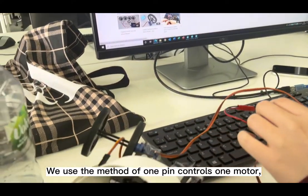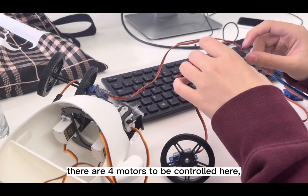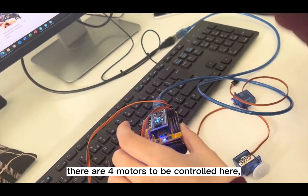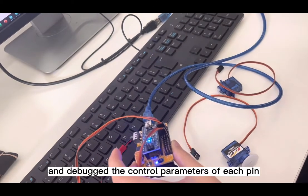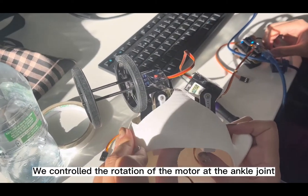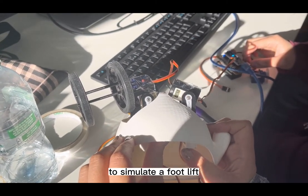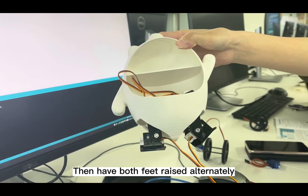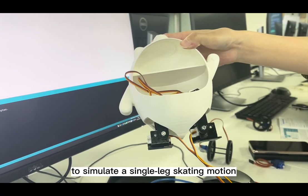We use the method of one pin controls one motor. There are four motors to be controlled here, and here are the control parameters of each pin. We control the rotation of the motor at the ankle to simulate the foot lift, then have both feet rise alternately to simulate the single-leg skating motion.